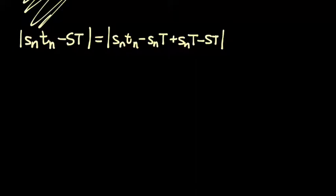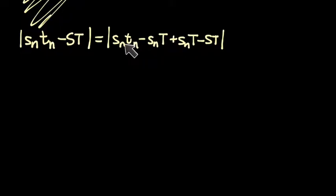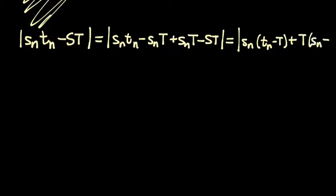We can get control over the difference between the product SnTn and the product that limits ST by using this clever add and subtract trick, then factoring by grouping an Sn from the first pair and a capital T from the second pair. What we end up with is something that looks like this: Sn times the quantity TN minus T, plus T times the quantity Sn minus S.